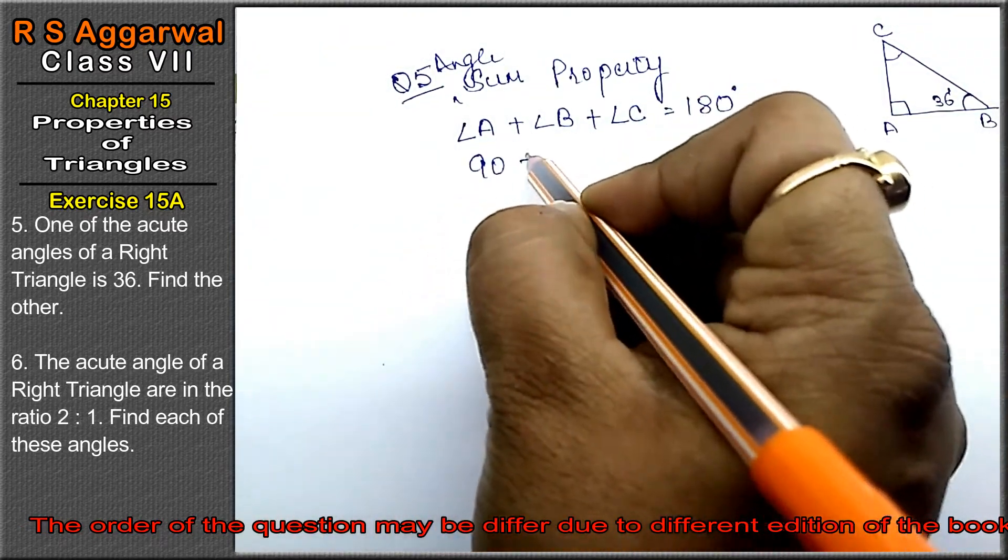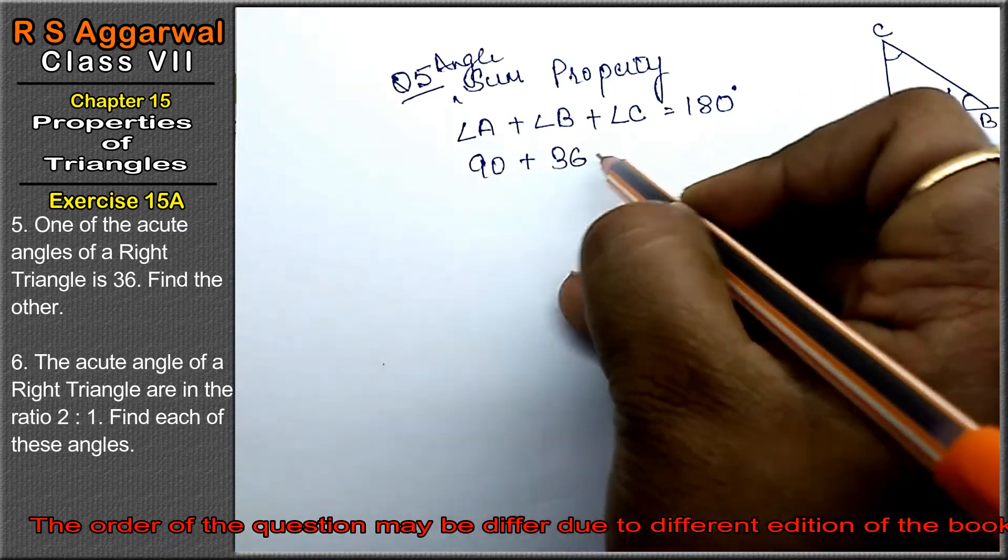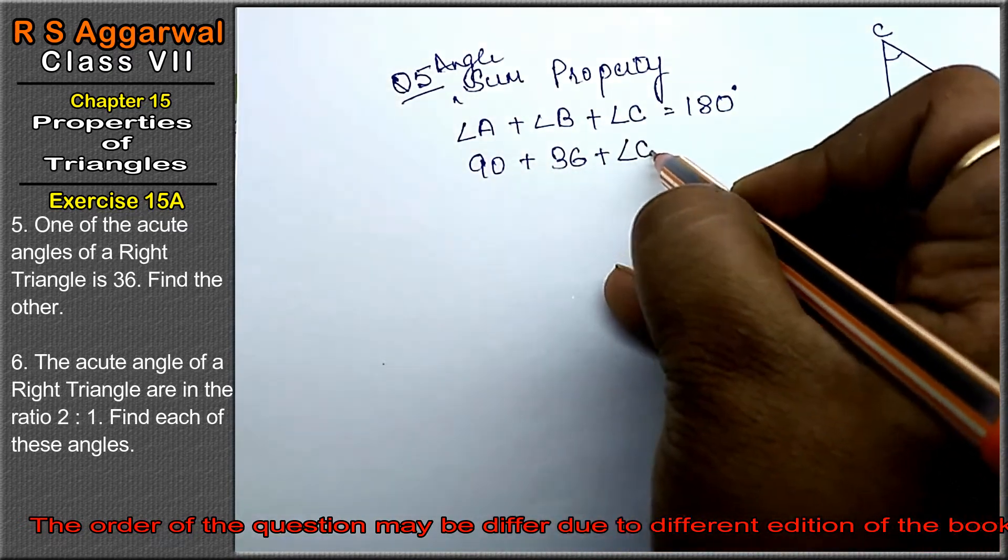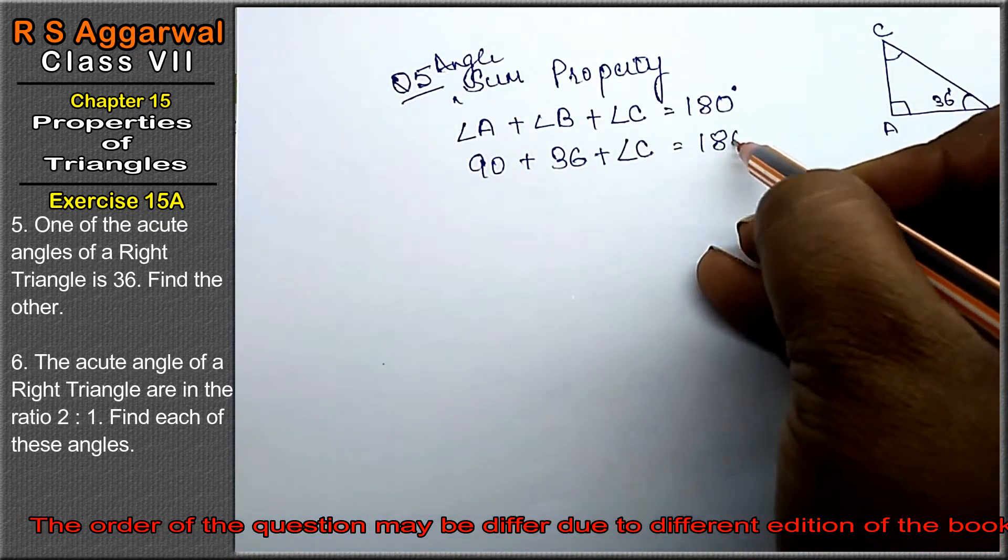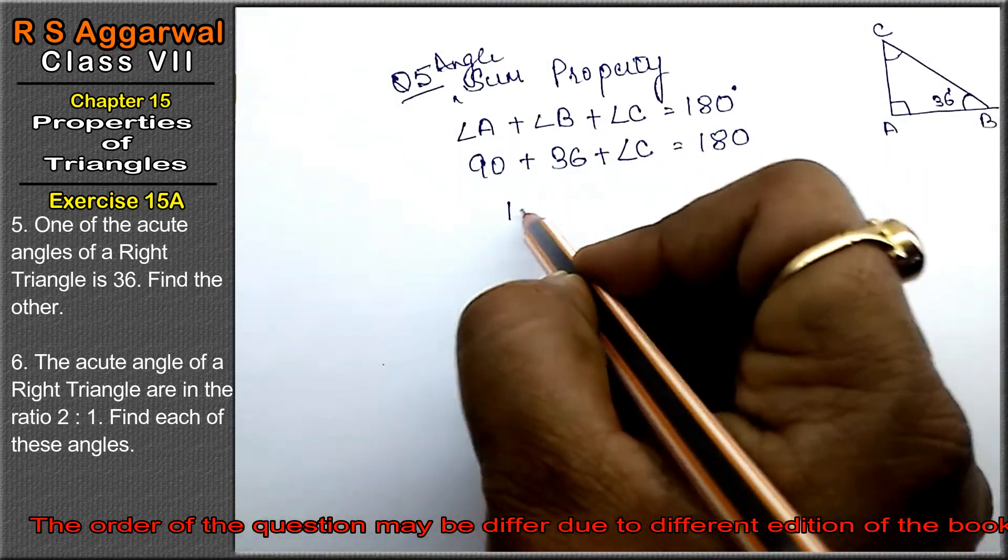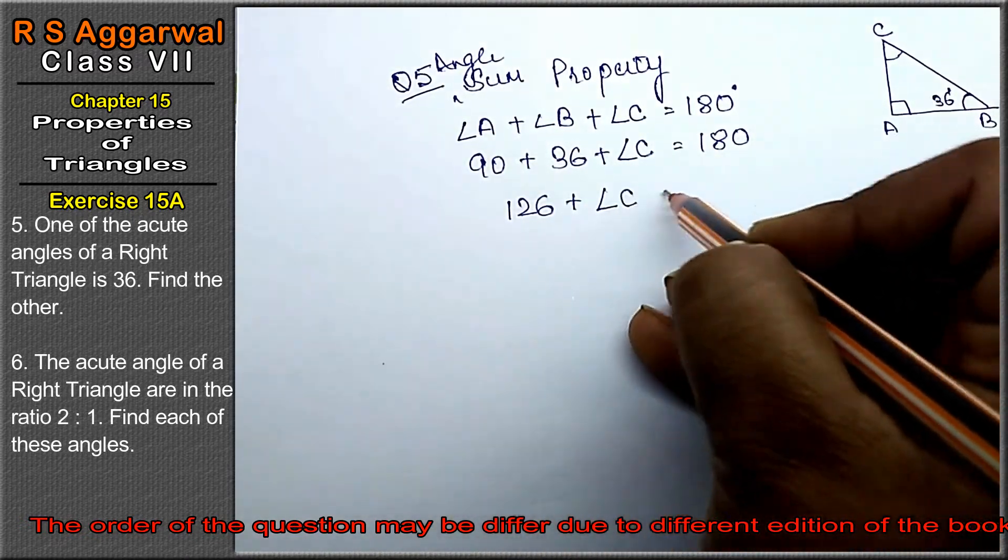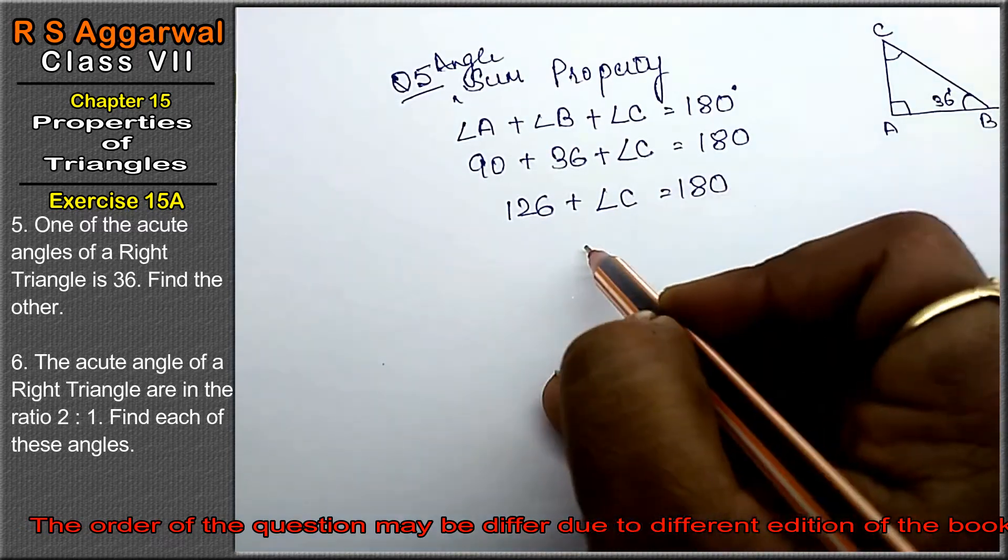Angle A is 90 degrees, angle B is 36 degrees, angle C equals... these equal 180. So 90 plus 36 plus angle C equals 180.